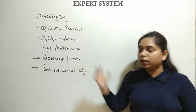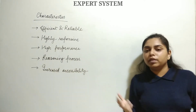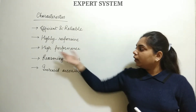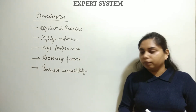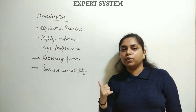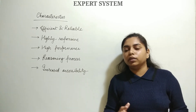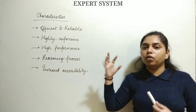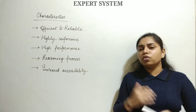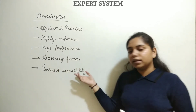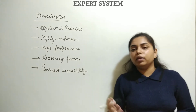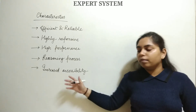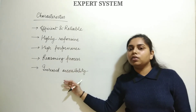Next is high performance — complex problems can be solved efficiently and accurately. Next is the reasoning process: the reasoning process is transparent, meaning we can easily see how a problem is being solved. Finally, increased accessibility — expert systems can be used easily because they fulfill the requirements of multiple experts.